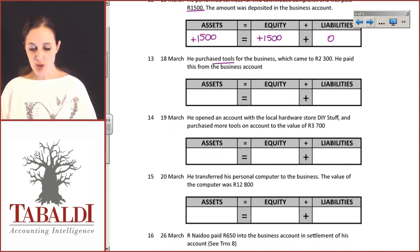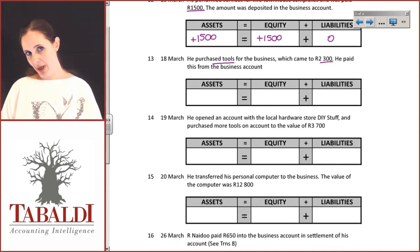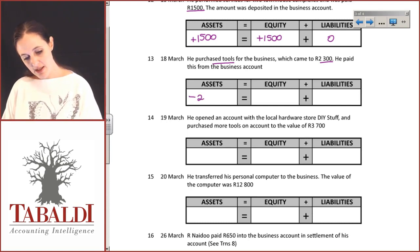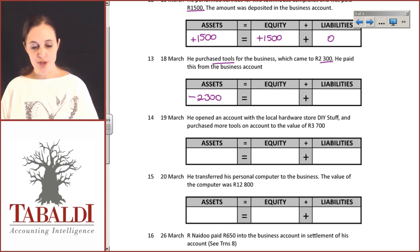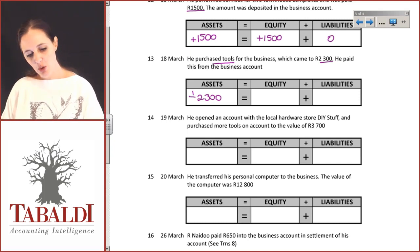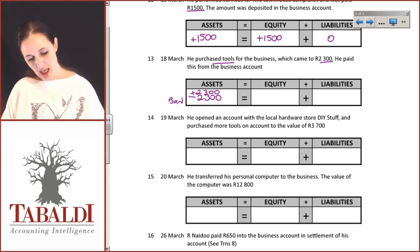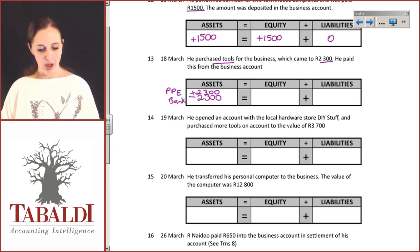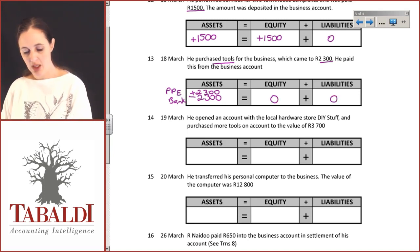He purchased tools for the business which came to 2,300 Rand — paid from the business account. The bank account has decreased by 2,300. He purchased tools for the business, which means he believes this will create future economic benefits in the form of future sales. So although the bank has decreased, the assets have increased — bank goes down and your PPE (property, plant and equipment) goes up, and nothing else is impacted.